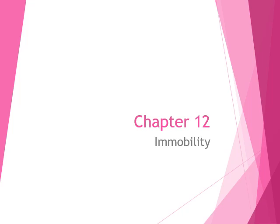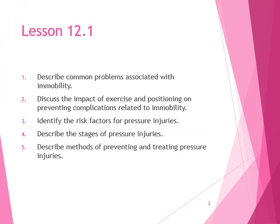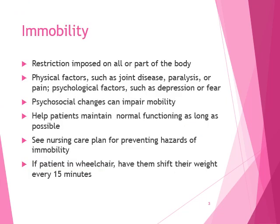Welcome back for Chapter 12 on Mobility. Immobility is a restriction imposed on all or part of the body. Physical factors that affect mobility include joint disease, paralysis, and pain. Psychological factors such as fear or depression, and psychosocial changes, can also impair mobility. For example, losing a loved one may cause someone to withdraw and stay in one place.